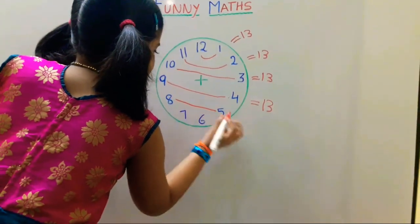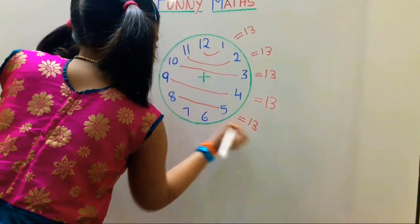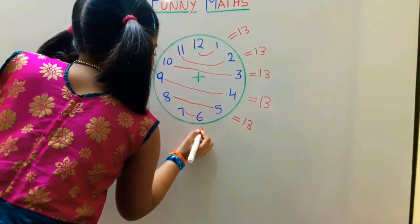8 plus 5 is equal to 13. 7 plus 6 is equal to 13.